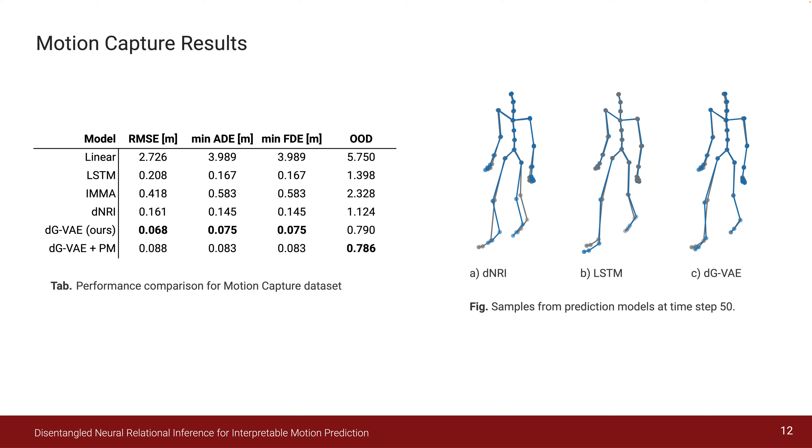In a comparative overview of our method in this table, we notice that it significantly outperforms DNRI on all three metrics with 44% improvement, and how our method, especially with disentanglement, improves out-of-distribution generalization. These findings are also reflected qualitatively in the figure to the right, where the gray skeleton represents the ground truth and the blue ones are the predictions.